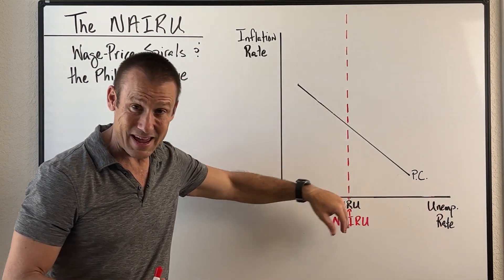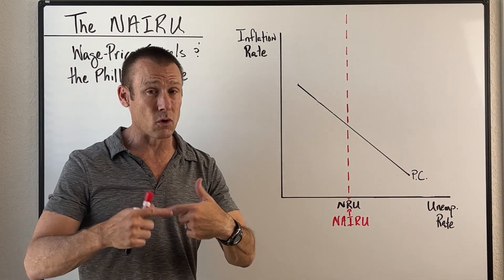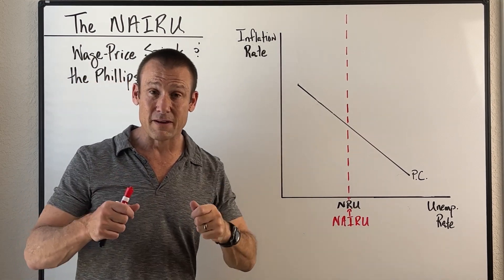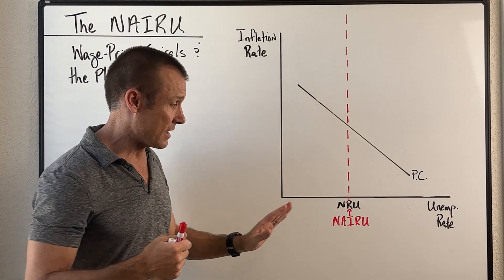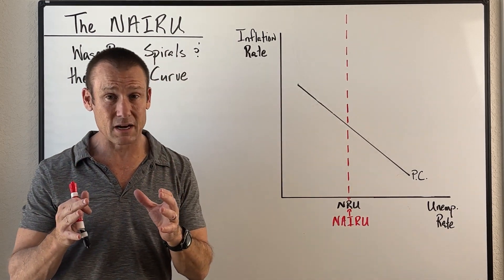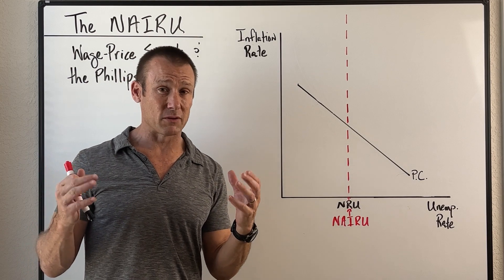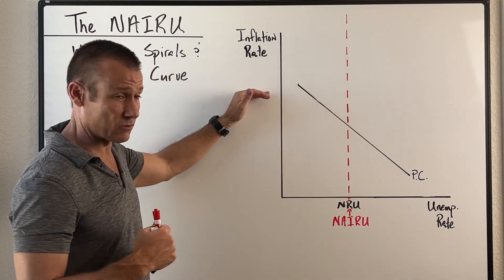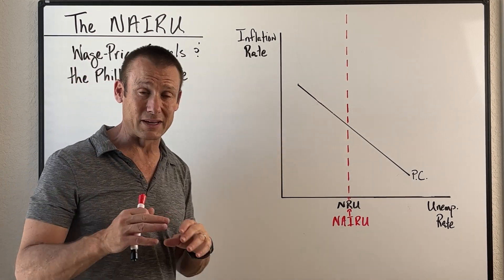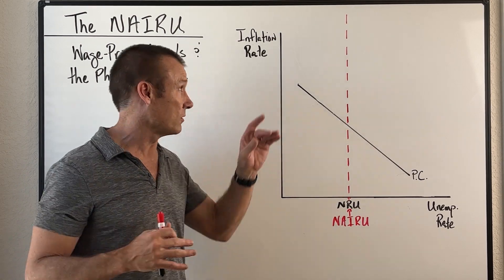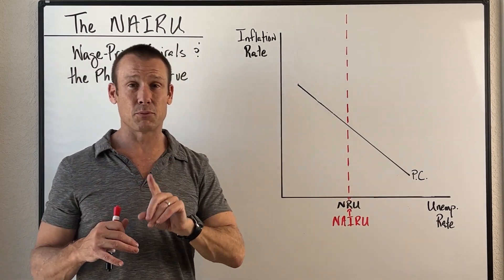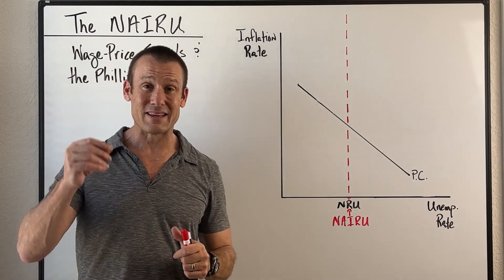When unemployment starts coming down, that economy is warming up — people start spending more and inflation ticks up, because inflation is an increase in prices. And if unemployment starts to increase, that's the economy going into a recession; people have less money, they spend less, and we generally see that inflation rate starting to decline. So again, a negative relationship between the inflation rate and the unemployment rate.